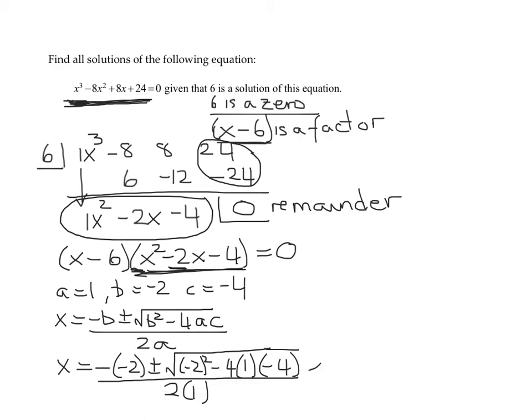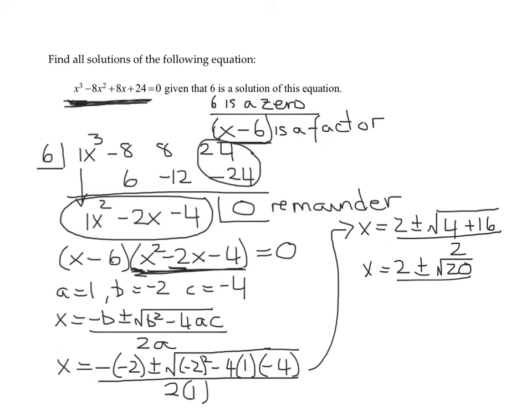So, I'm running out of room. I'm going to have to write up here. So, I'm going to have x equals 2 plus or minus the square root of 4. Negative 2 squared right here is 4. And then I have negative 4 times 1 times negative 4 is positive 16 all over 2. So, x equals 2 plus or minus the square root of 20 over 2.